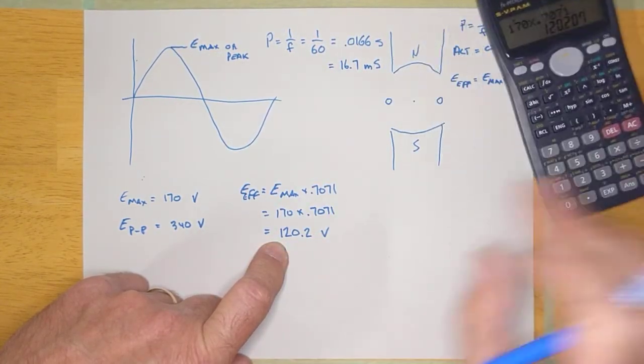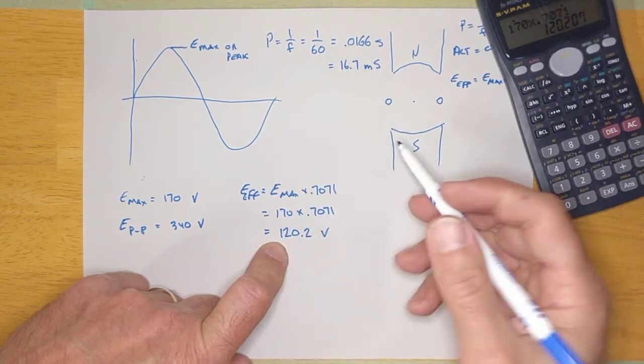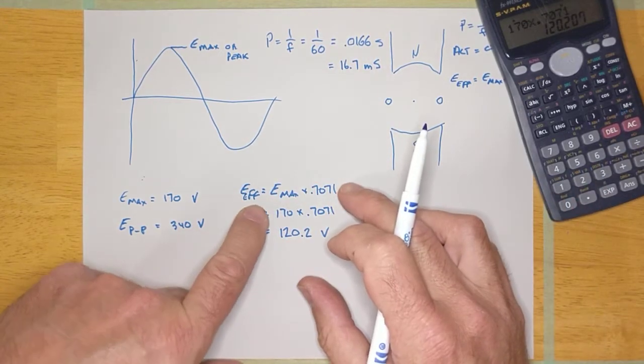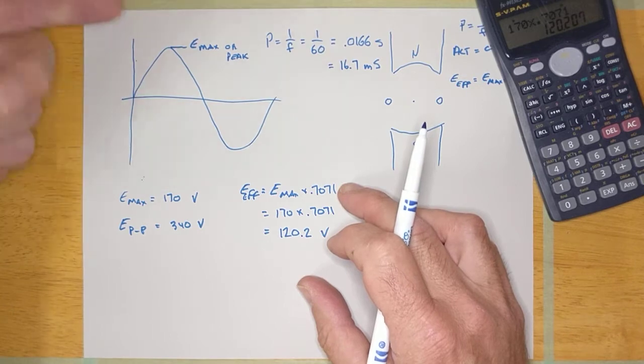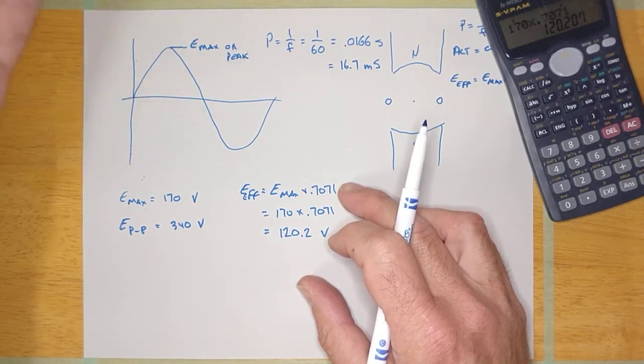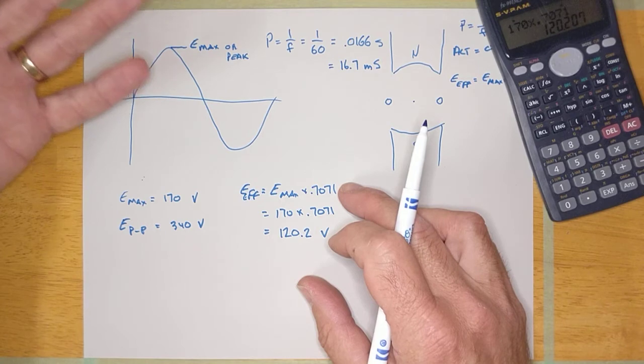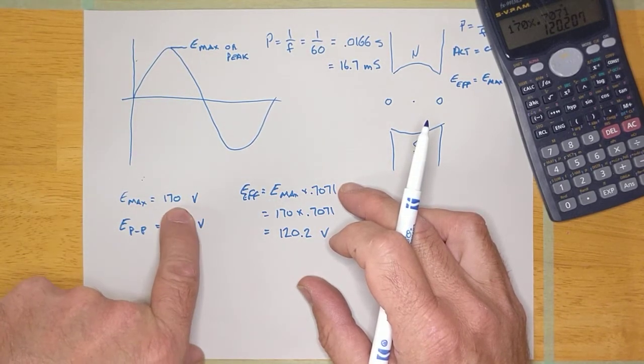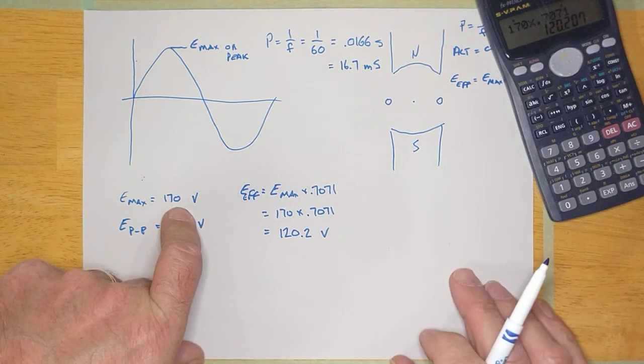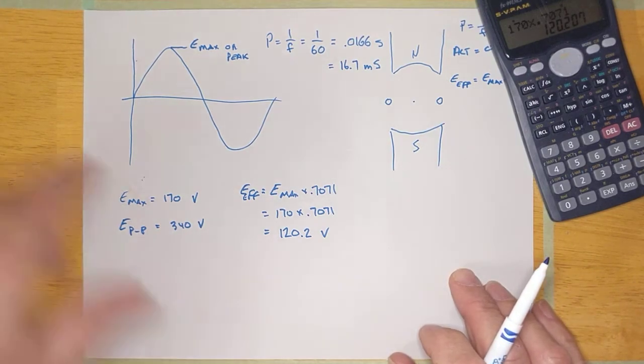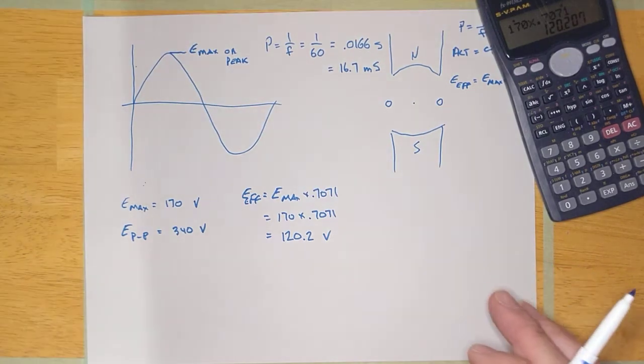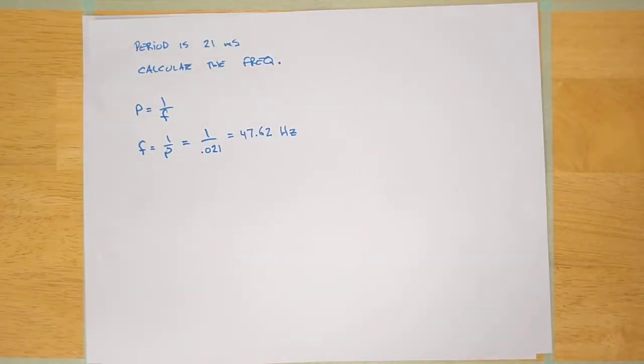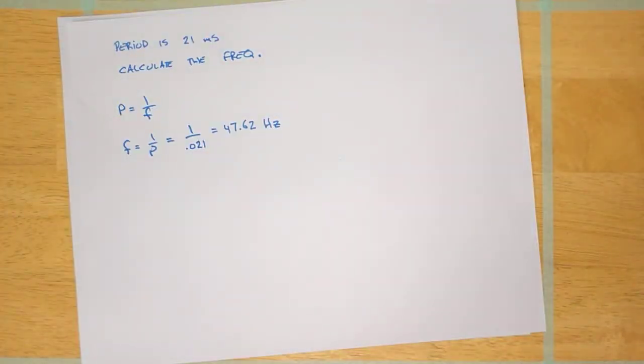So now, why do we even bother with the effective voltage? I mean, isn't it annoying that you have to take the peak voltage and multiply it by 0.7071 to figure out the effective voltage? Wouldn't it be better just to call it 170? I mean, that's what it's peaking at. Let's call it that. Well, the reason it exists is because of this.